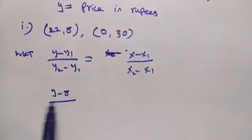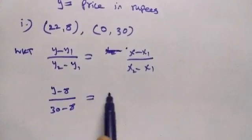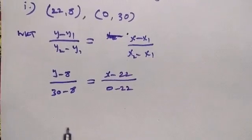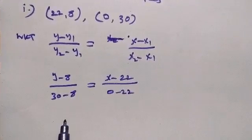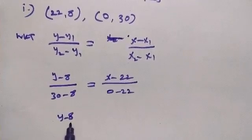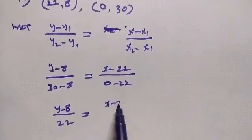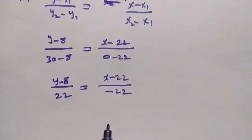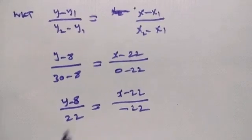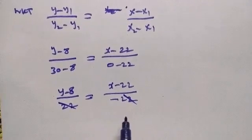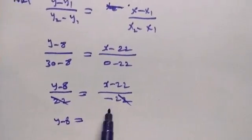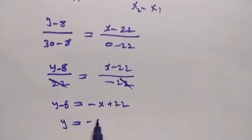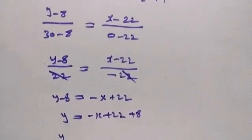So: y minus 8, divided by y2 minus y1 which is 30 minus 8, equals x minus x1 divided by x2 minus x1 which is 0 minus 22. So: y minus 8 by 22 equals x minus 22 by minus 22.